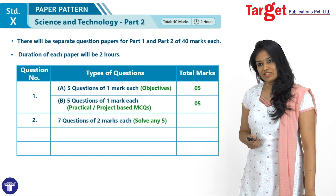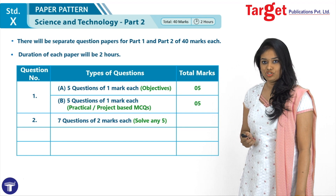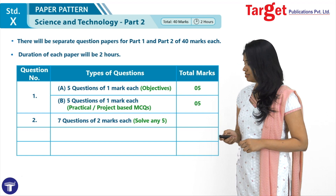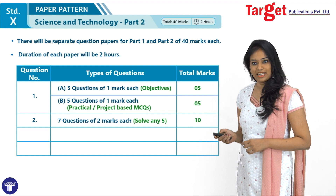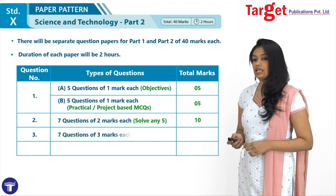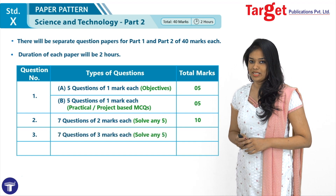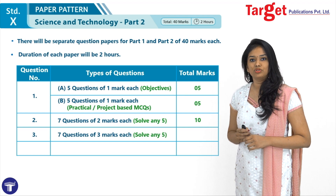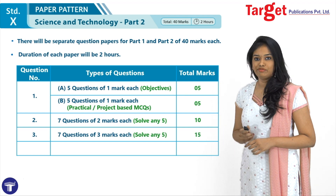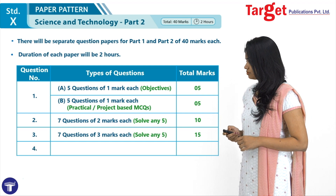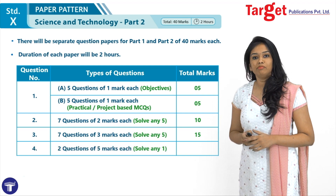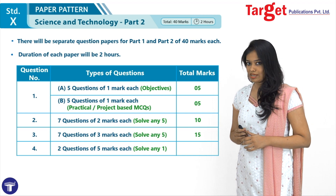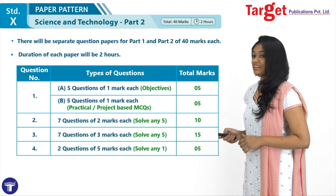The second question would be of 2 marks each. You would be given 7 questions out of which you are required to attempt 5, scoring 10 marks. The third question is again a set of 7 questions carrying 3 marks each, out of which you are expected to solve 5, giving a total of 15 marks. Question number 4 are your long answers for 5 marks, with one option, carrying 5 marks.